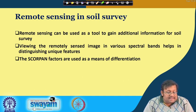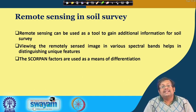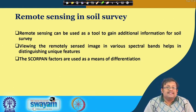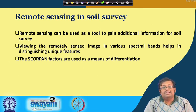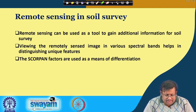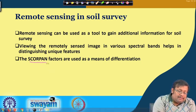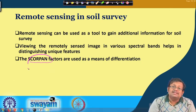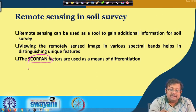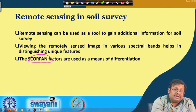Remote sensing in soil survey — why is it important? Remote sensing can be used as a tool to gain additional information for soil survey, because viewing the remotely sensed image in various spectral bands helps in distinguishing unique features. The SCORPAN factors are used as a means of differentiation. We have been talking about this SCORPAN thing — we will learn what it is in the next few slides.